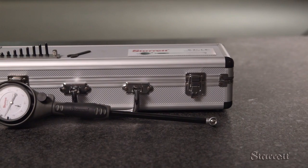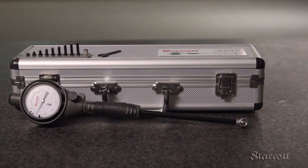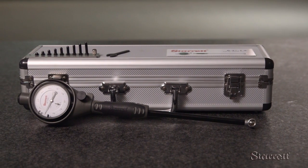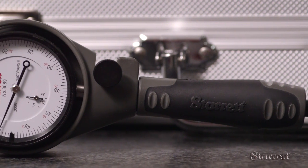The dial bore gauge will directly read the diameter of deep holes with exceptional accuracy. They take a two-point measurement over a specific range with interchangeable tips. Today we will look at the Starrett Model 3089Z-131-715J.